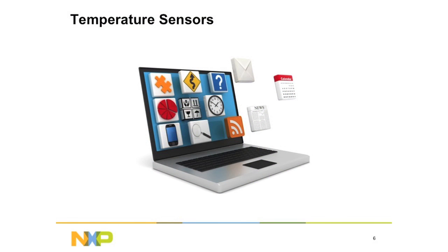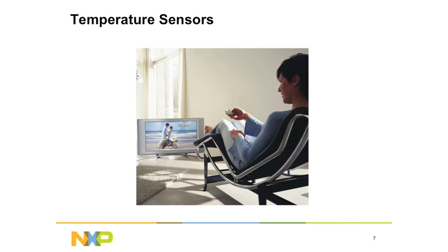Keeping electronics cool often requires a cooling fan, which in turn draws electrical power and will quickly drain the battery if left running at all times. One application of temperature sensor ICs from NXP is the control of fans in laptop computers. In fact, the computing power of leading-edge laptops can be improved by up to 30% simply by throttling the memory activity based on the actual temperature of the DIMM memory modules. NXP has an application-specific part to do just that.